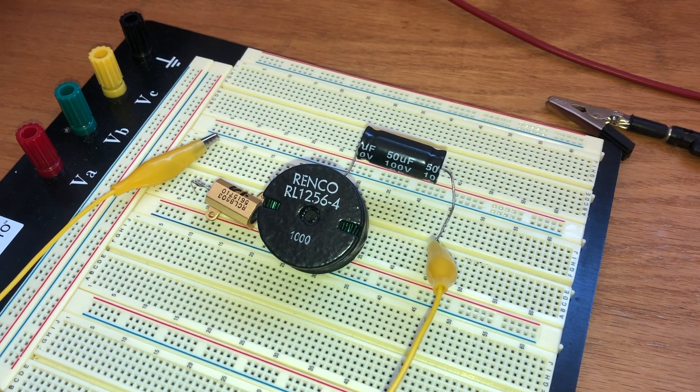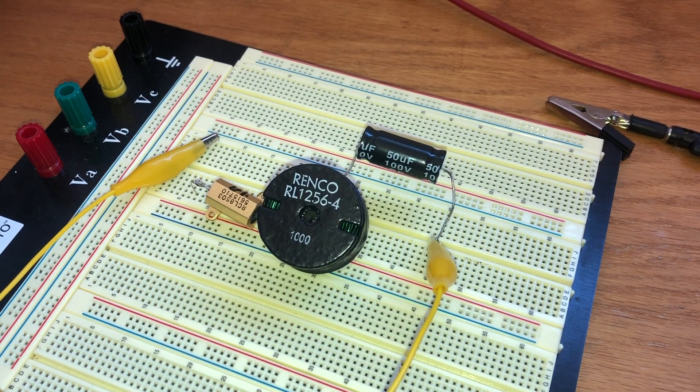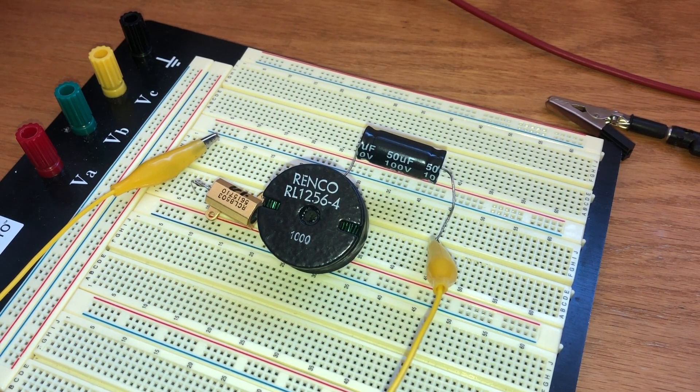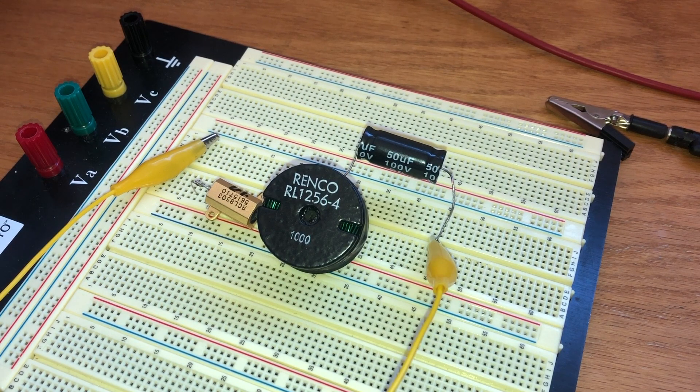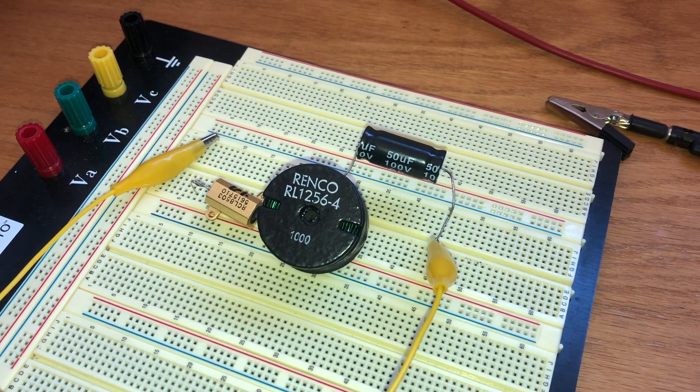For the lab today we'll be comparing experiment to theory for the natural response of a series RLC circuit. Recall that for the natural response there's energy stored in the circuit and then something happens to dissipate that energy.